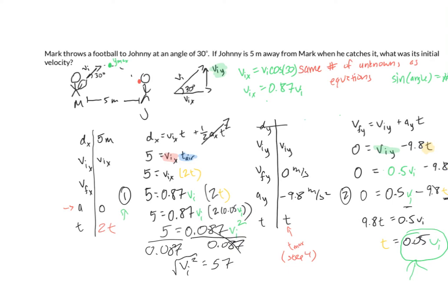And finally, I'll take the square root of both sides, giving me my final answer, v initial is equal to 7.6 meters per second.